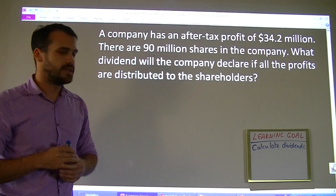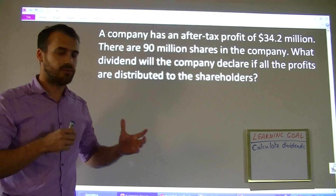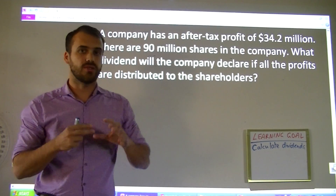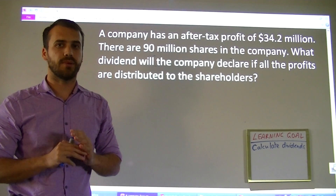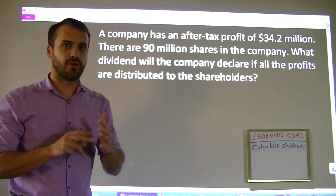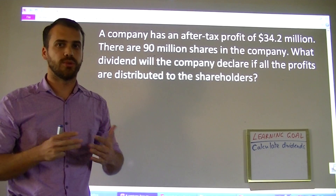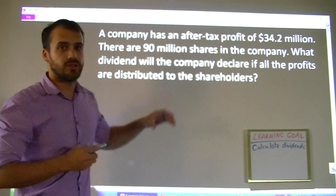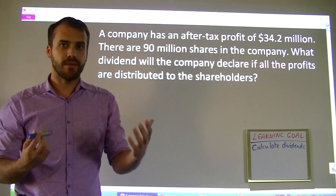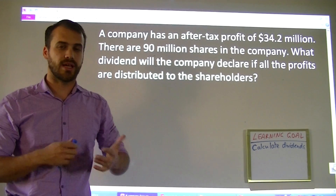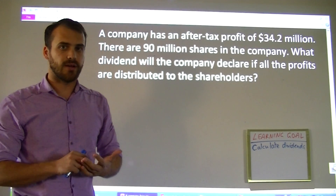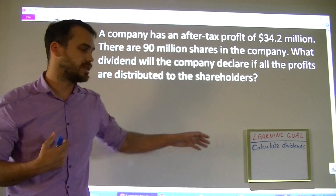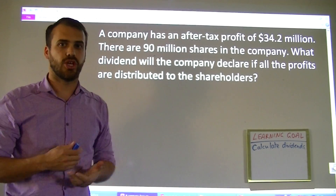In this video, we're looking at dividends. Remember that when you buy shares in a company, what effectively happens is you become an owner in that company — only a very small owner. If you bought shares in Apple, you wouldn't be a very important owner, but you're an owner nonetheless. That means you may be entitled to some profits that the company makes. Let's see how to calculate how much profit or dividends you should get for your shares.